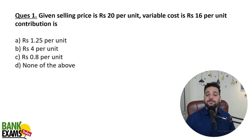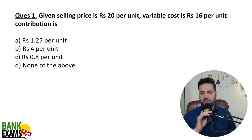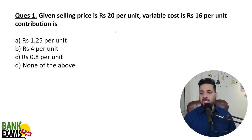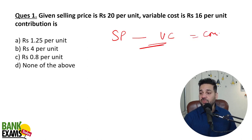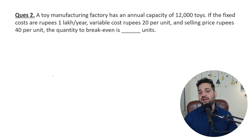This is the basic formula. Given the selling price is 20 rupees per unit and variable cost is 16 per unit — the contribution is selling price minus variable cost. Contribution = 20 minus 16 = 4. So 4 is the correct answer.